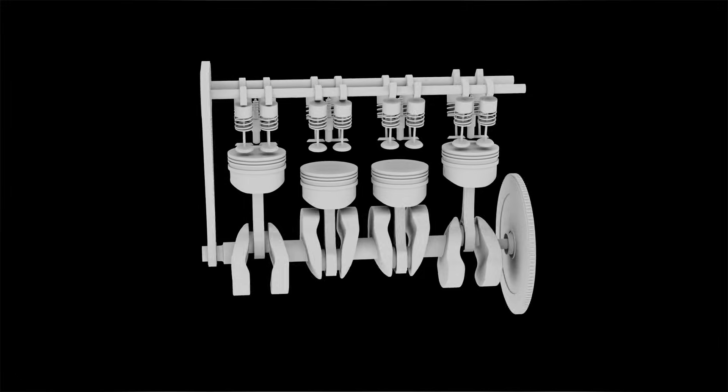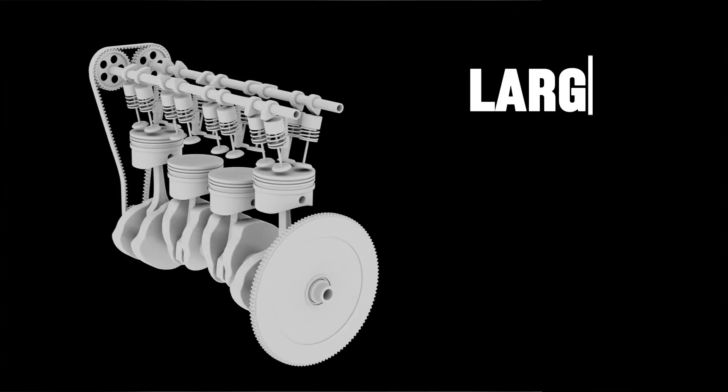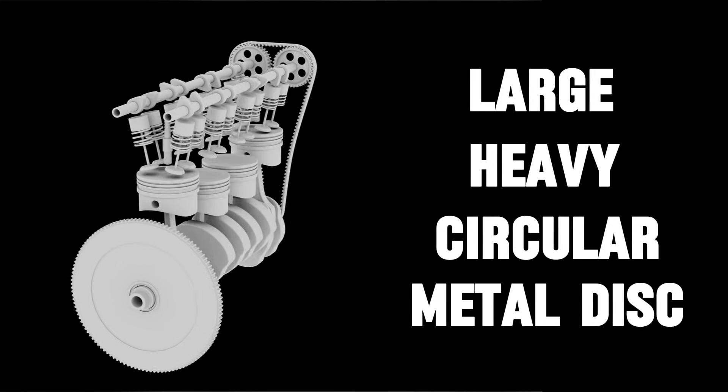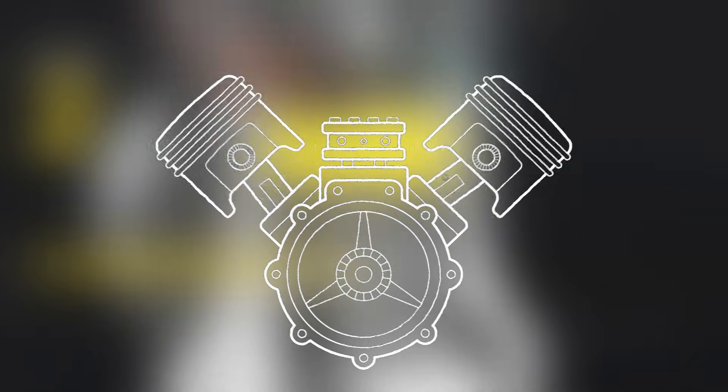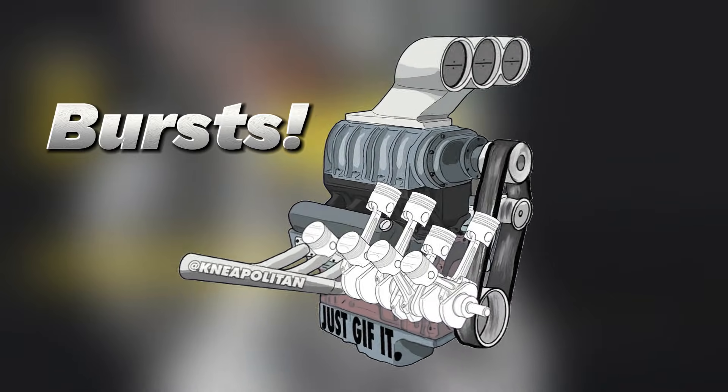At its most basic level, a flywheel is a large, heavy, circular metal disc that's attached to the rear end of your engine's crankshaft. Now, the engine itself doesn't produce power in a smooth, continuous flow. It produces power in bursts.